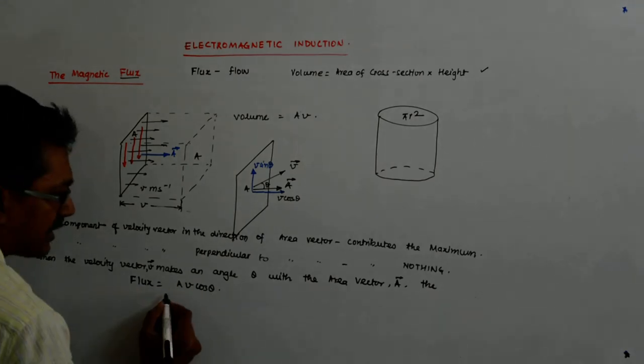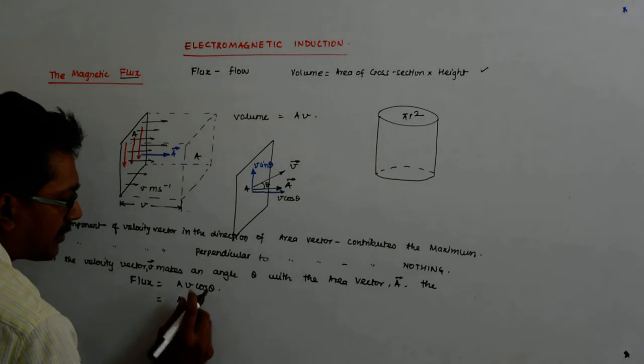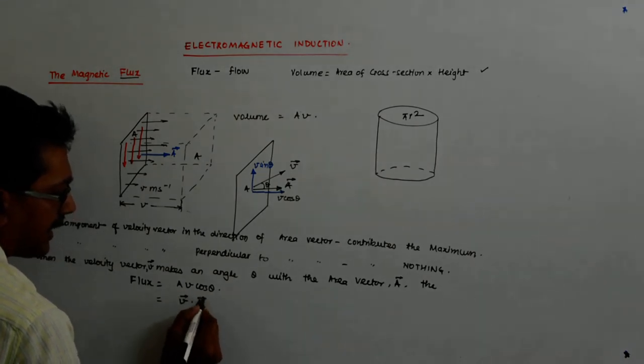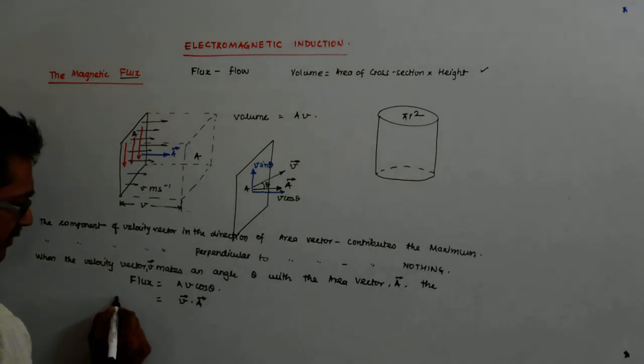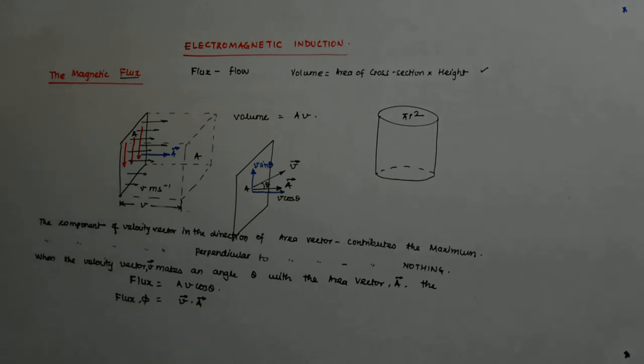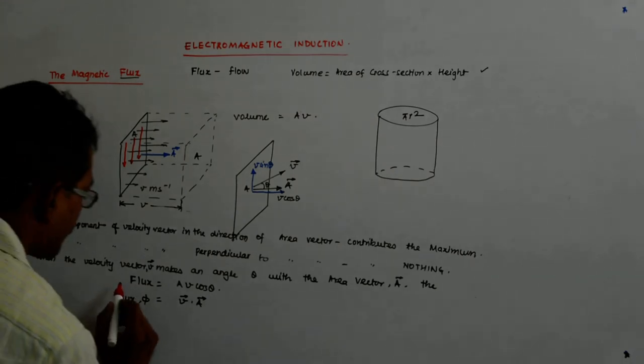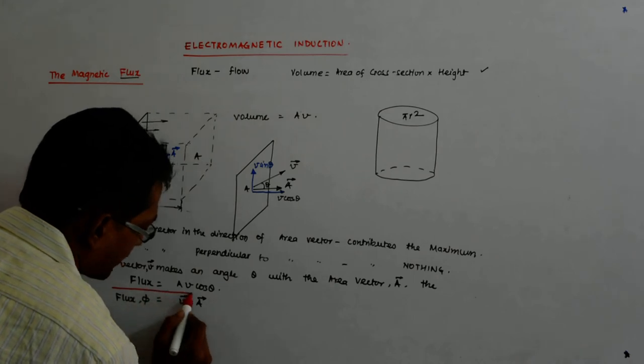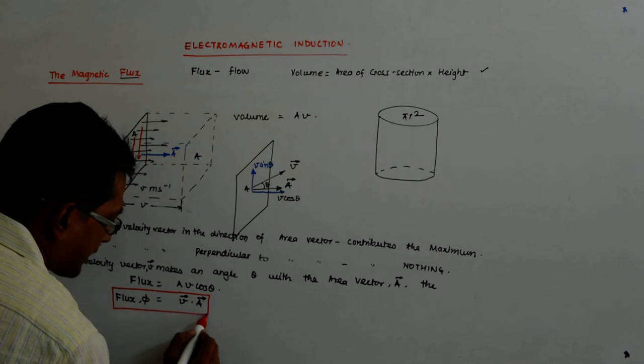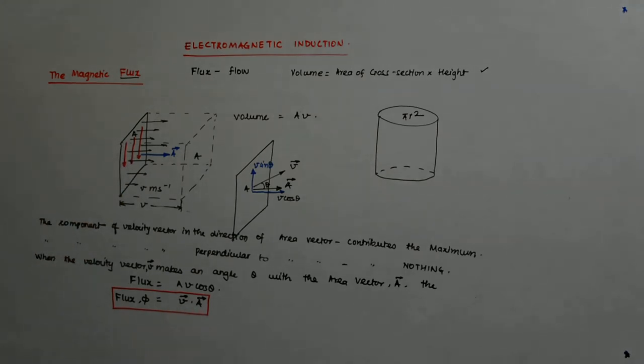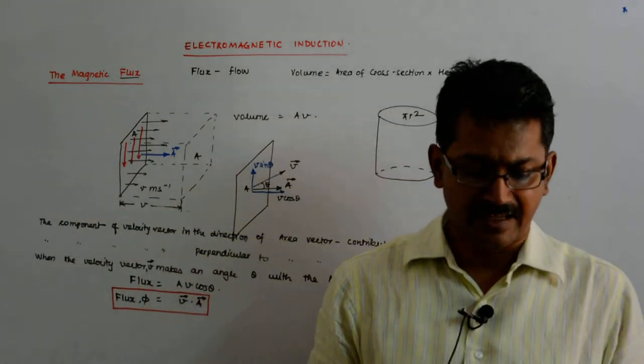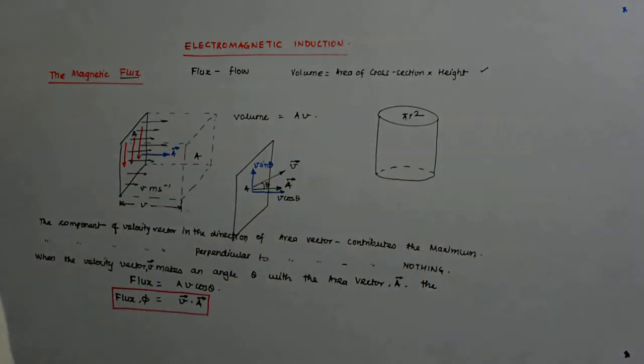Now, what is this? This is nothing but V dot A. Flux is denoted by a special notation phi. Phi stands for flux. Due to these Greek symbols, at times we find physics to be tough. But rest assured, had things been in English, it would have been F. Since the scientists were more Latin and Greek people, or at least the language was more prevalent, these have crept in. So it is phi. Phi is equal to V dot A.